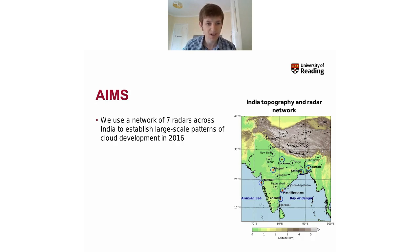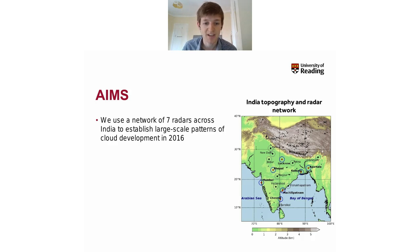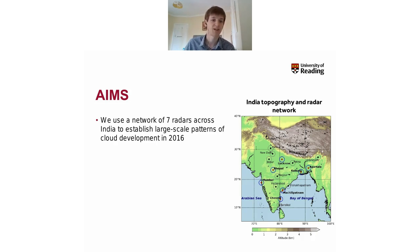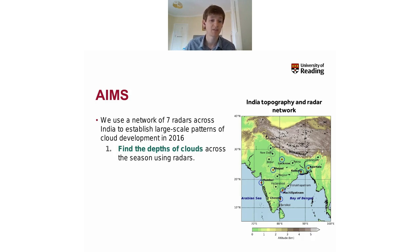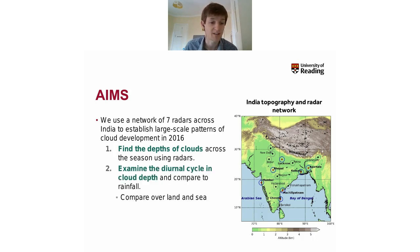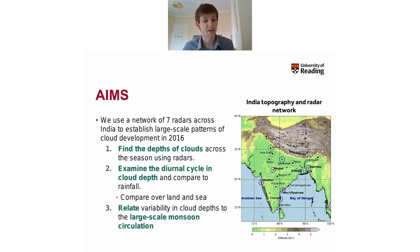We're going to use a network of seven radars across India. The map on the right shows India's topography, including major features like the Himalayas, with the seven radar locations marked with blue rings and red diamonds. The three points I want to hammer home are: first, we can find the depths of clouds across the season using radars; second, we can examine the diurnal cycle in cloud depth and compare to rainfall; and third, we can compare over land and sea environments and relate variability in cloud depths to the large-scale monsoon circulation.